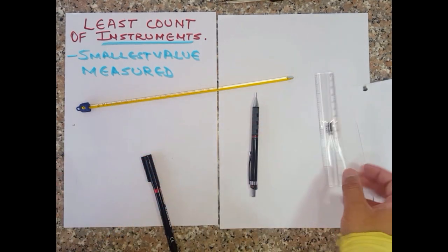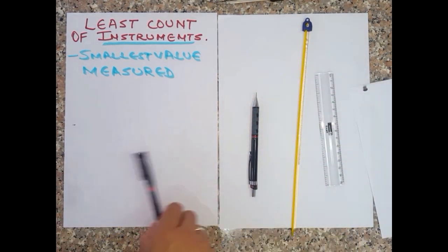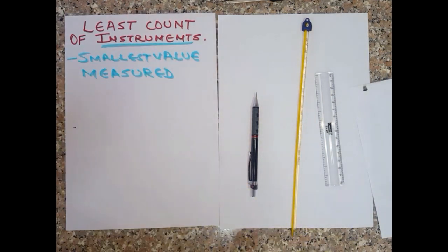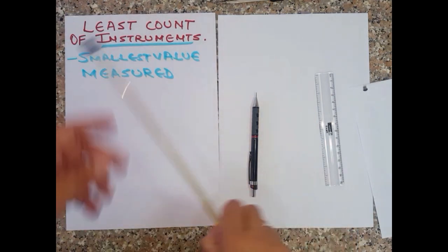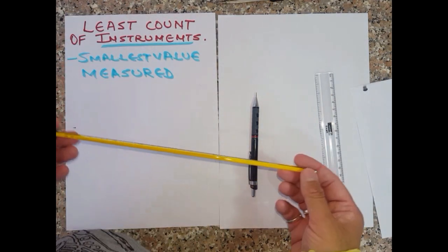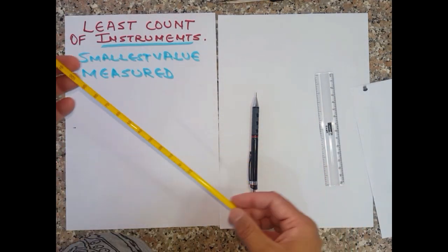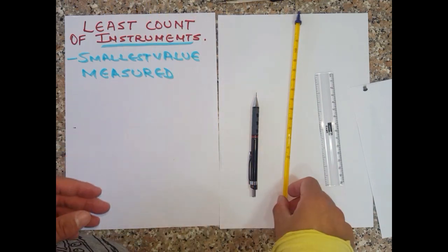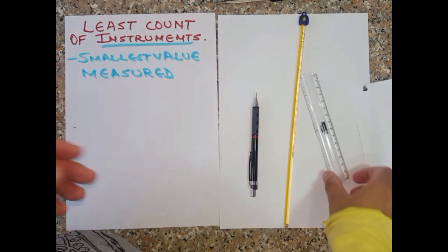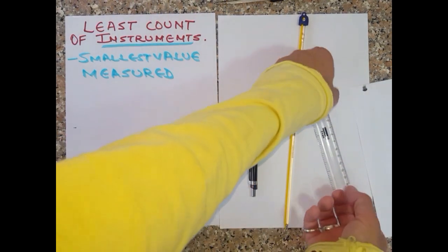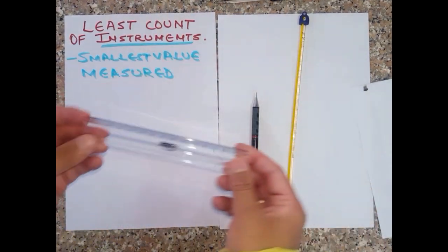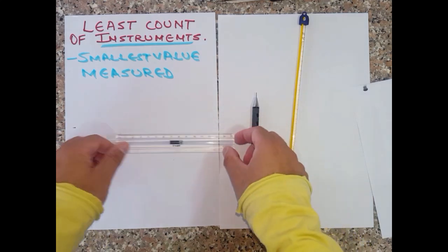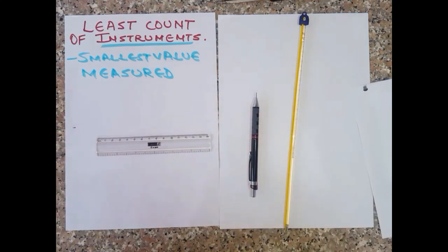So what is the meaning of the term 'least count' of an instrument? Least count means what is the smallest value that an instrument can measure. For example, if we look at this scale a little closely...